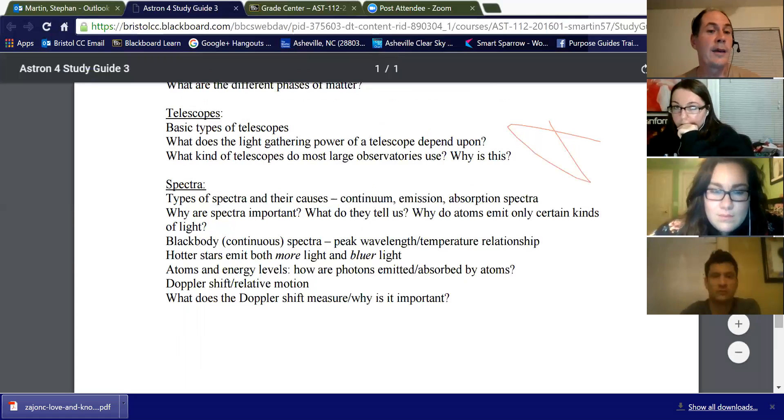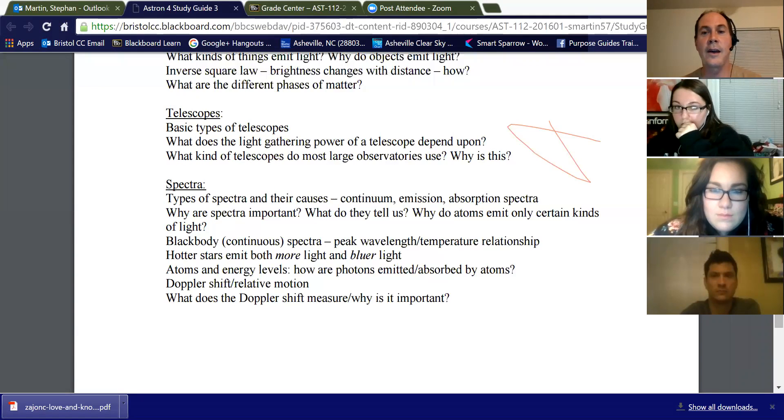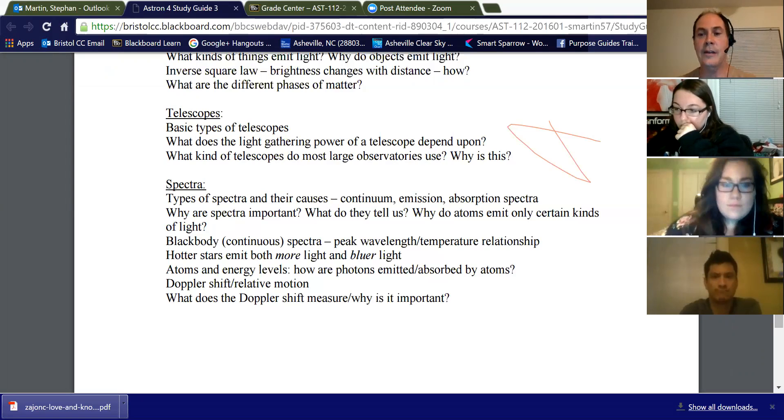Spectra, spectra are really important, because they tell us what things are made out of. If you can analyze an object's spectra, you can tell the elements that make up the spectrum. So in the lab last week, you looked at different emission lines, say for hydrogen, and you saw that hydrogen only emits at these certain wavelengths, so red, kind of a blue-green, and then like a purple wavelength.